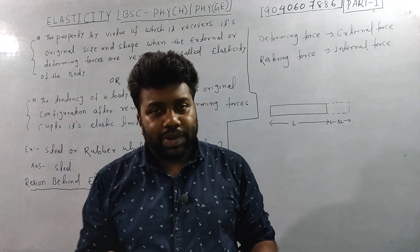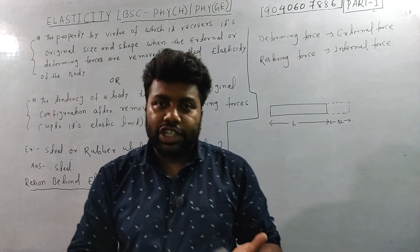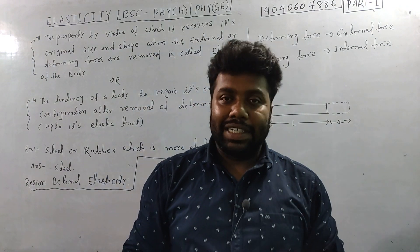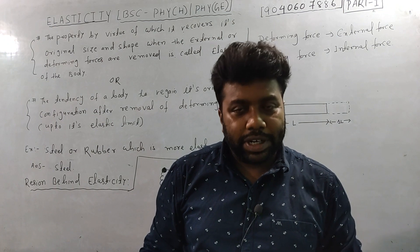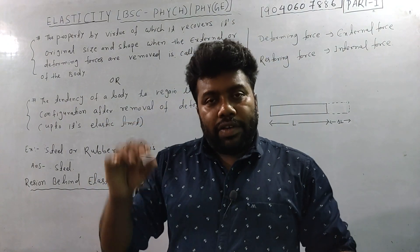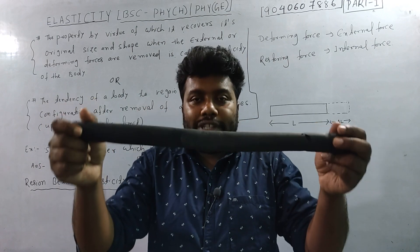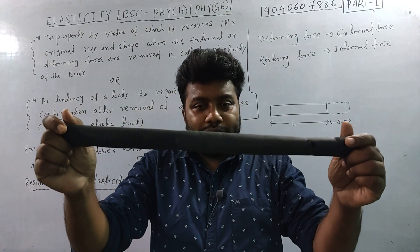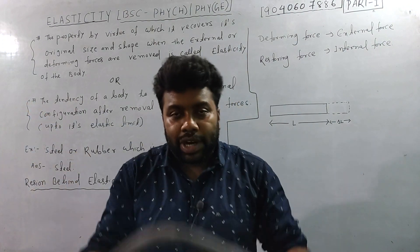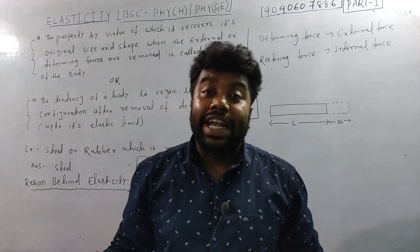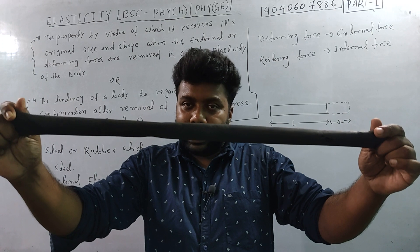When you apply or expand a force, the elasticity situation will arise. For example, rubber and metal both have elasticity, but of different natures. This situation is called an elastic situation. In physics, a body which has an external force applied to it — the external force, which we call the deforming force, is the force that changes the shape of the body.